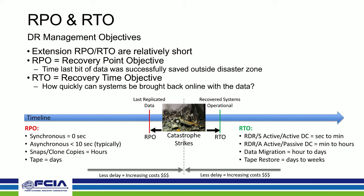RPO stands for recovery point objective. It is the last bit of information that was safely recorded off-site so that if a disaster happens, that's how far back in time you could recover your data. On the graphic, we have a disaster or catastrophe, and the arrow pointing backwards represents the last bit of information that was safely recorded off-site.